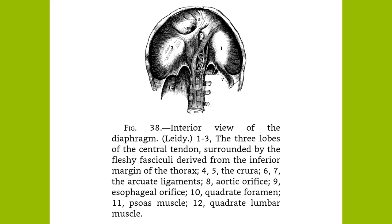Its surfaces are covered by serous membranes: by the two pleurae and the pericardium above, and the peritoneum below. It partially supports the heart and lungs. Convex toward the chest, it becomes flattened in contraction and so increases the capacity of the chest. It aids in all expulsive acts such as sneezing, coughing, laughing, urinating, defecating, vomiting, and childbirth.